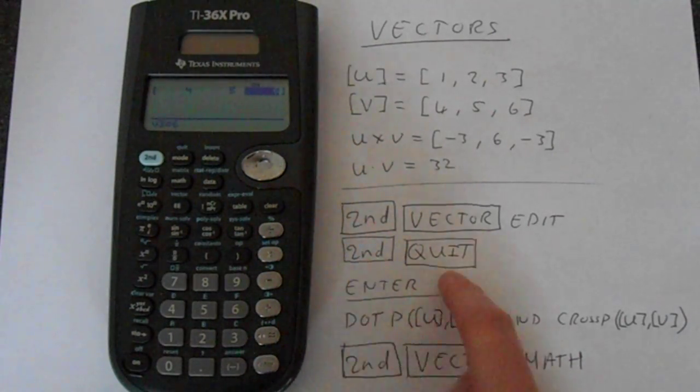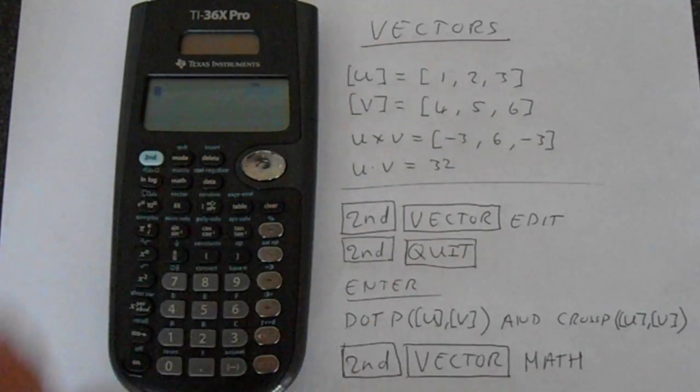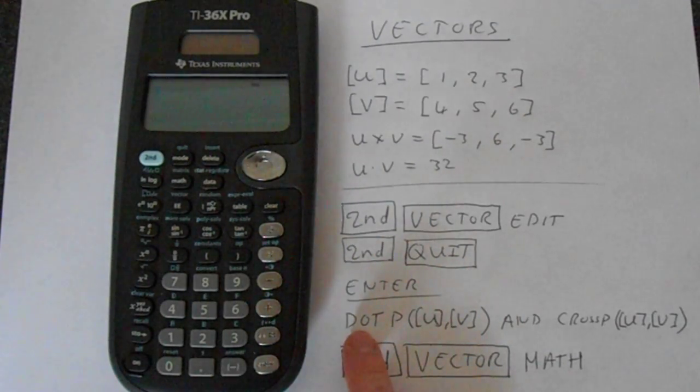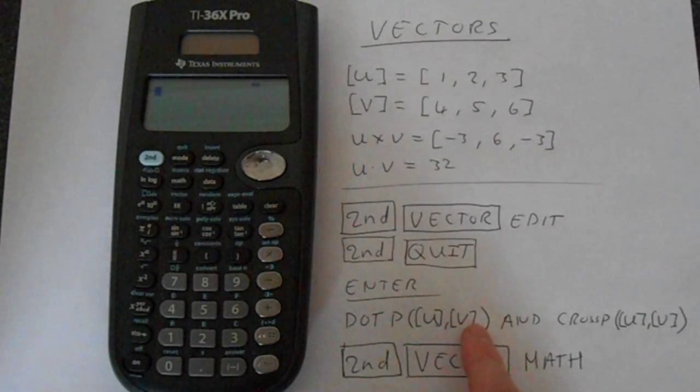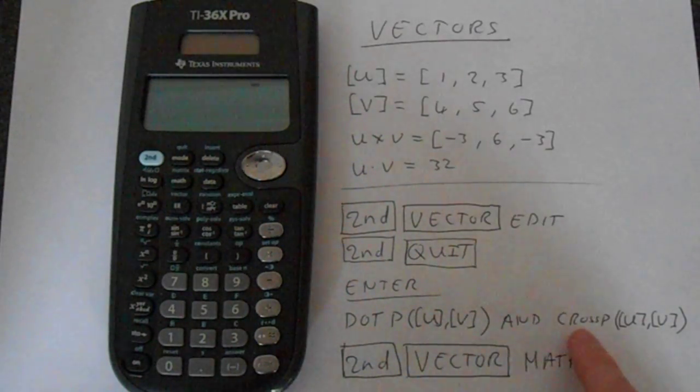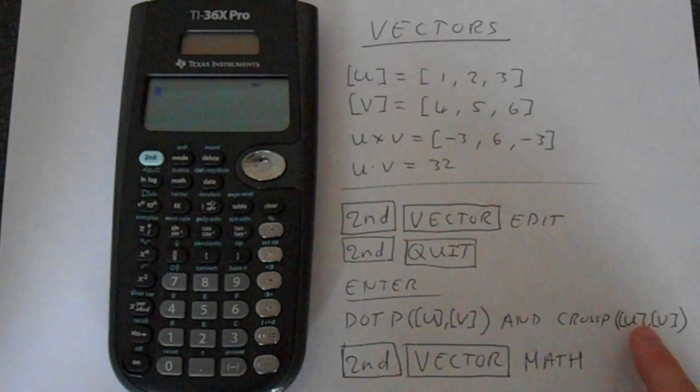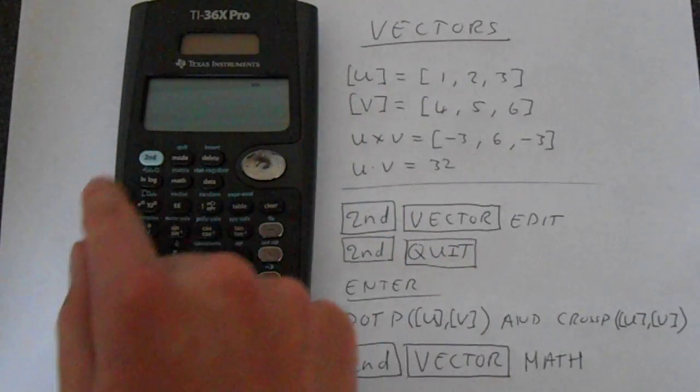And then we'll go second function quit, and quit's right next to second function. Now what we need to enter now is we'll do a dot product. So we enter this dot product u, v in brackets, and then we want cross product, which is just cross p, and then u, v. So I'll show you how to get that.